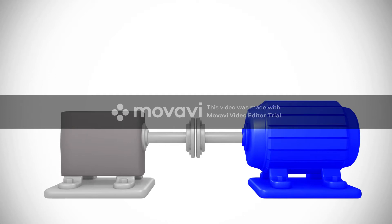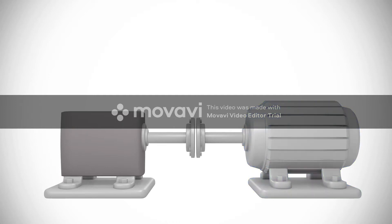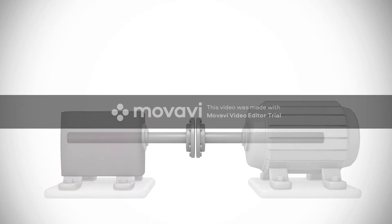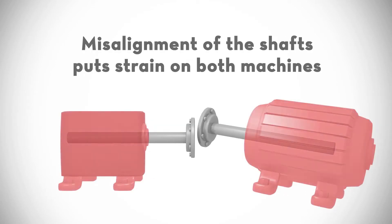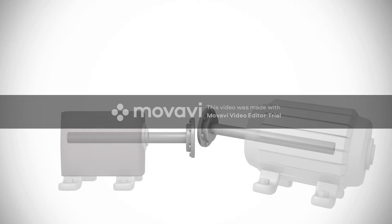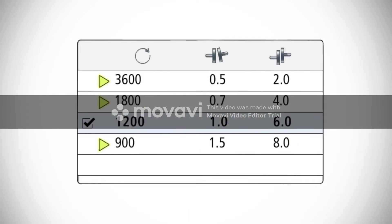The shaft in the motor or engine rotates and drives the shaft in the pump or other driven machine. Misalignment of the shafts puts strain on both the motor and the pump. It can damage the bearings, the couplings, and other machine components. For this reason, manufacturers of rotating equipment have established tolerances defining the maximum acceptable levels of angular and offset misalignment for their machines.